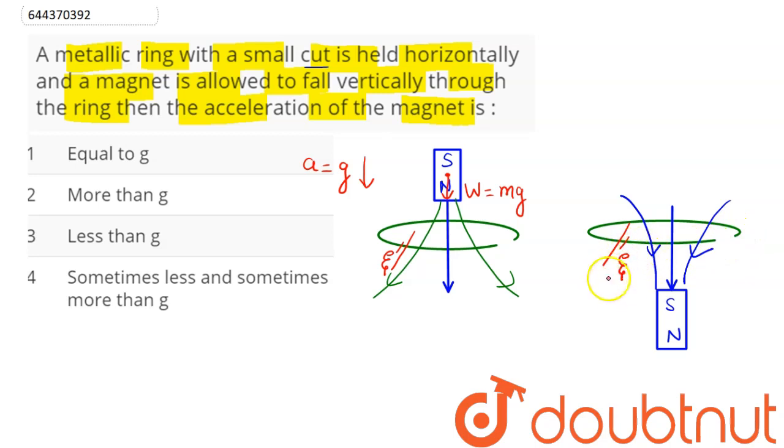Now since the loop is opened so induced current will not flow, only there will be induced EMF. Hence the only force acting on this bar magnet is its weight mg. Hence the acceleration of this bar magnet will be equal to g.